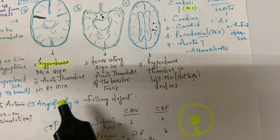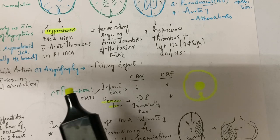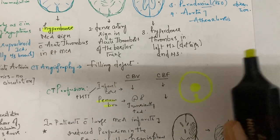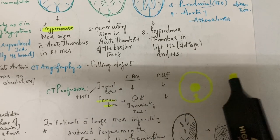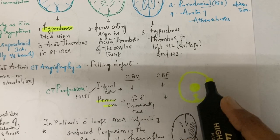CT perfusion is most important. This is the infarct core; this is the penumbra. Normally you have to calculate mean transit time.